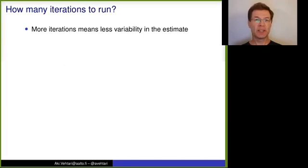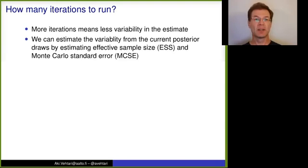So more iterations means less variability in the estimate. When using MCMC to get exact inference, we would need infinite number of iterations. But that's not usually feasible, so we run less. We can estimate the variability from the current posterior draws by estimating effective sample size, ESS, and Monte Carlo standard error, MCSE.